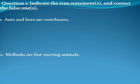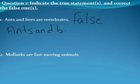Let's start with Riva. The statement says ants and bees are vertebrates — true or false? First step: we write false. Then the correction: ants and bees are invertebrates; they don't have a backbone. Thank you Riva.